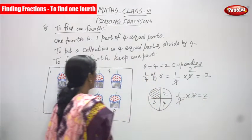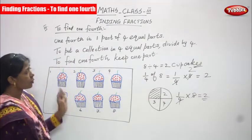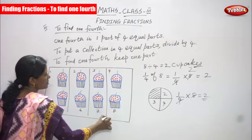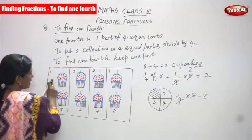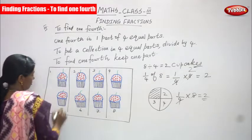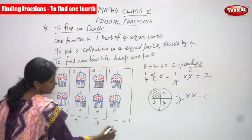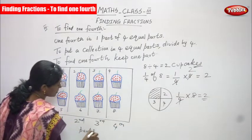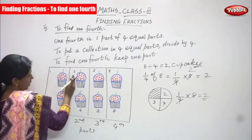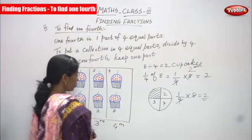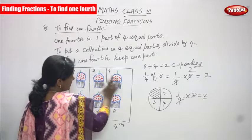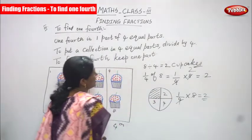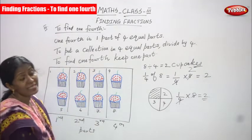Total number of cakes is eight. We divided into four equal parts: first part, second part, third part, fourth part. In one part there are only two cupcakes. Second part: two cupcakes. Third part: two cupcakes. Fourth part: two cupcakes. So totally — total number of cakes is eight, and one fourth of eight gives two cupcakes. That is the right answer.